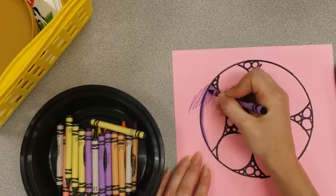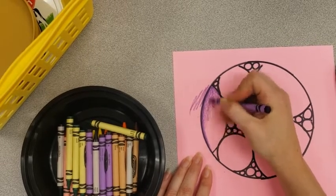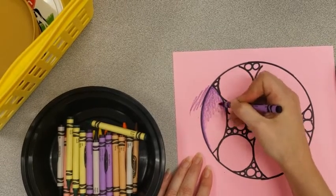So we're going to color it first before we cut it out. Our steps today are trace a circle, design a circle, and then decorate it and cut it out.